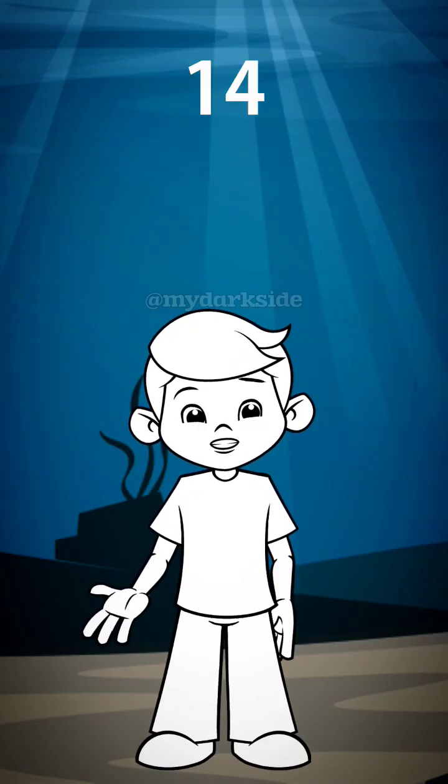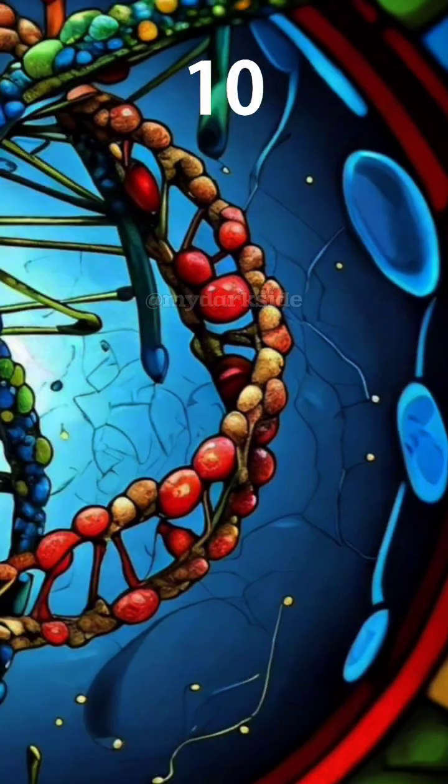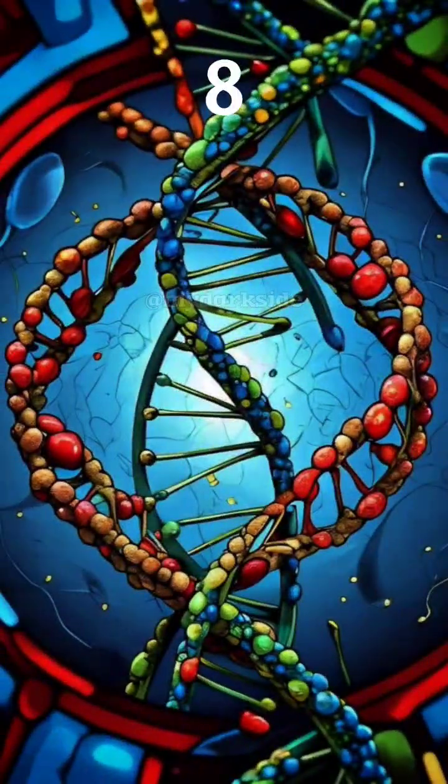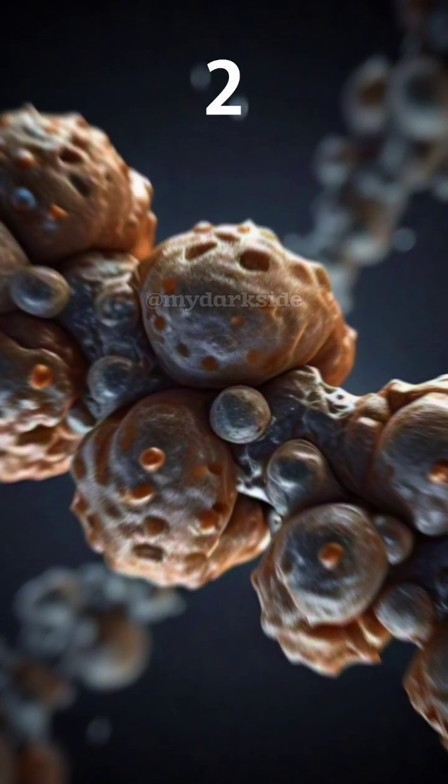Once the entire gene is copied, the mRNA strand detaches and leaves the nucleus, heading towards the ribosome in the cell's cytoplasm. At the ribosome, the mRNA is read to synthesize proteins, which are crucial for all cellular functions.